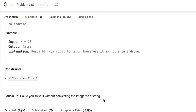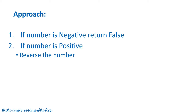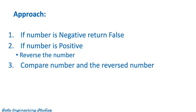Now let's get into the approach. The first step is: if the number is negative we can immediately return false, because all negative numbers cannot be a palindrome. If the number is positive, we can first reverse the number and compare it with the reversed number. If both numbers are the same we return true, else we return false.